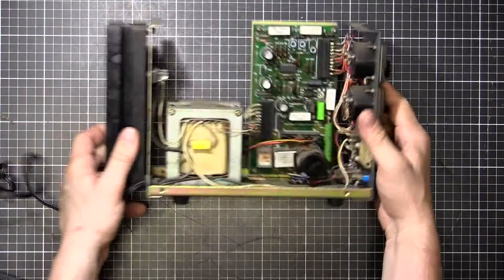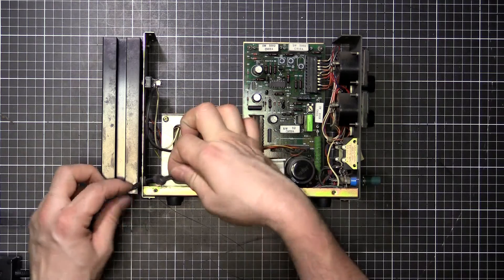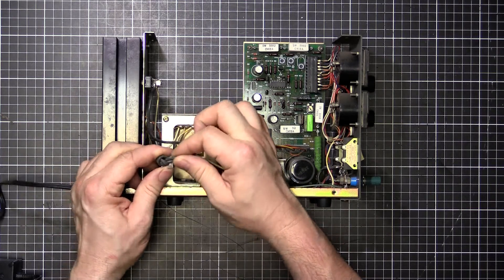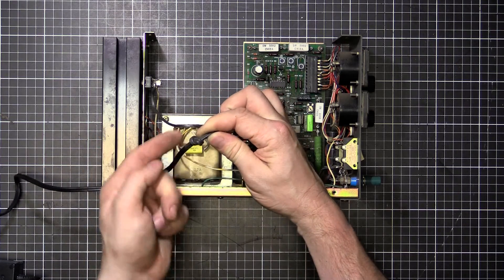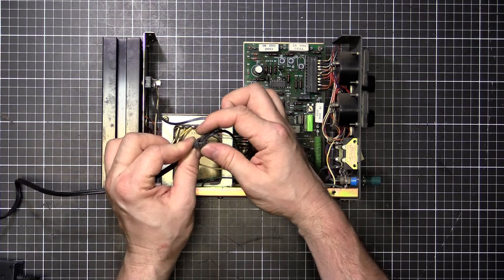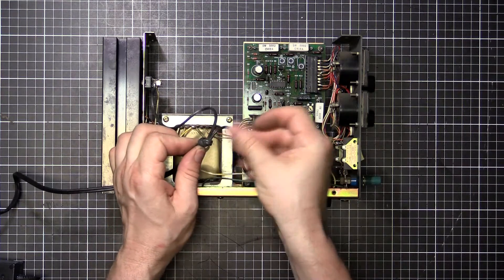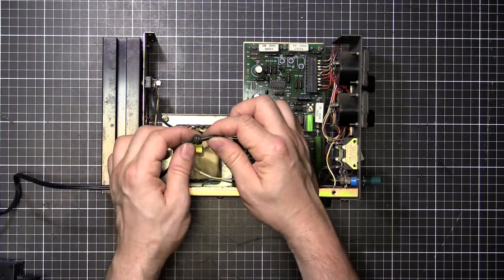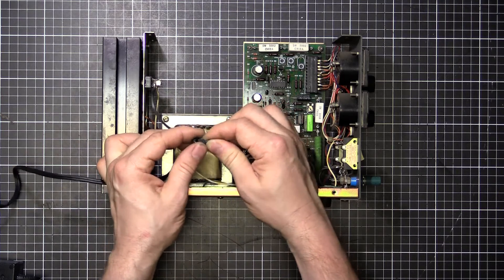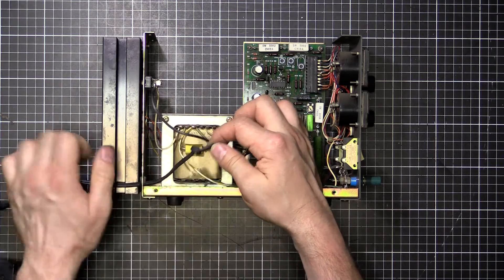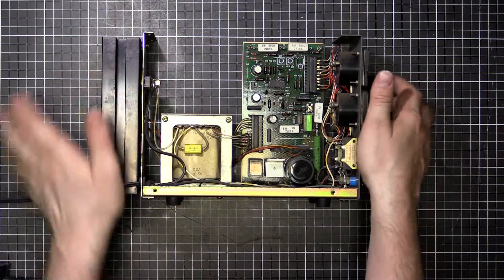So basically how it works is, we've got our mains comes in with a knotted strain relief there. I might do something about that because that's not a good thing. When the wire gets pulled, it pulls on the two conductors unequally and can actually break one of the conductors. It's not ideal. Actually in Australia, under the wiring rules, this is expressly forbidden. There's actually a rule saying you shall not knot the cord to add strain relief.